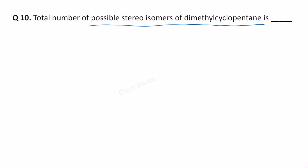Let me write a structural isomer for dimethyl cyclopentane. The reason I am showing this isomer is because if you are not very clear about the concept of stereoisomerism and structural isomerism, you would be making a mistake on questions like this. This is a structural isomer — this is not a stereoisomer because this molecule is achiral; there is no chiral center in this molecule, therefore this shouldn't be included in the count at all.